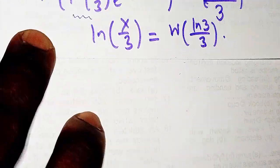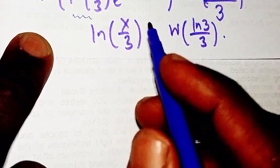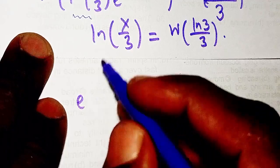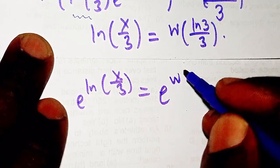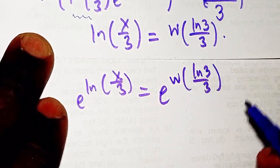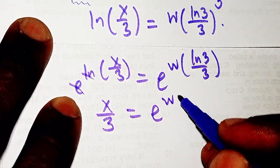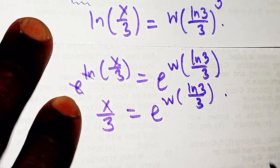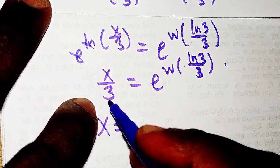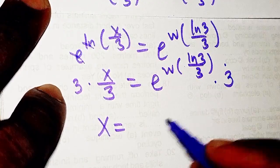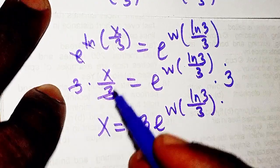Are you following? We move further. Taking the Lambert W function of both sides gives: ln(x/3) = W(ln(3)/3). To get rid of ln and solve for x, we introduce e to both sides: e^(ln(x/3)) = e^(W(ln(3)/3)), so x/3 = e^(W(ln(3)/3)). Multiplying both sides by 3 gives x = 3 · e^(W(ln(3)/3)).